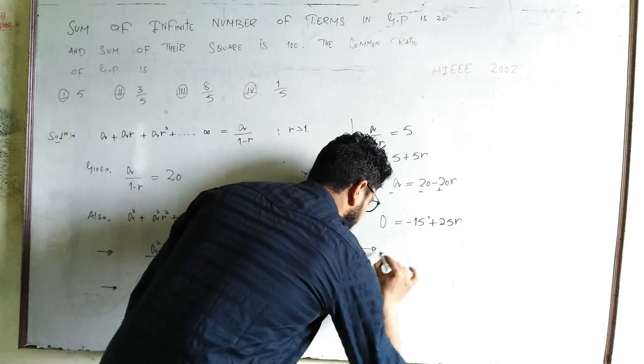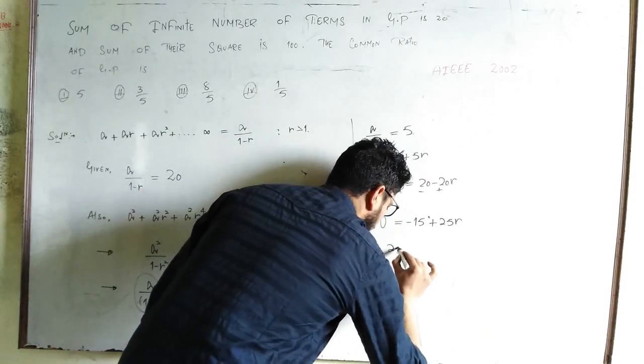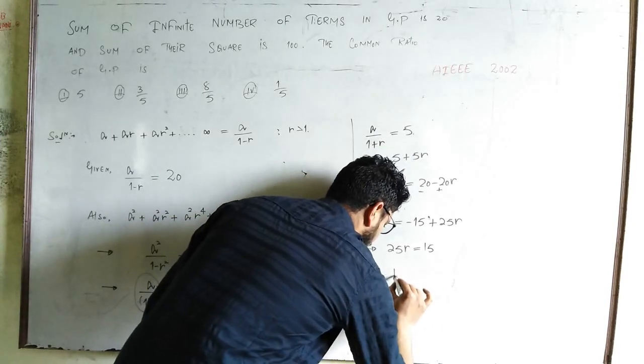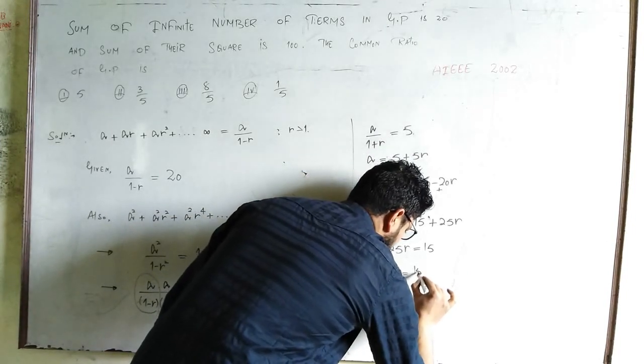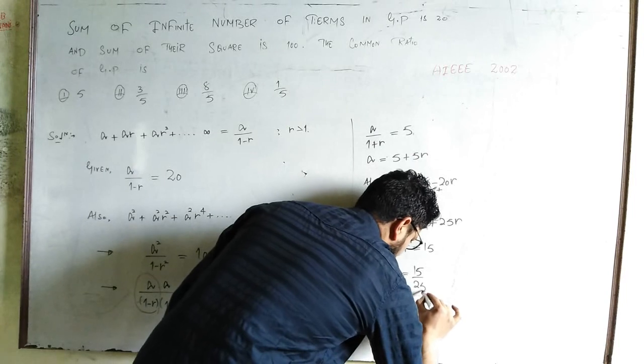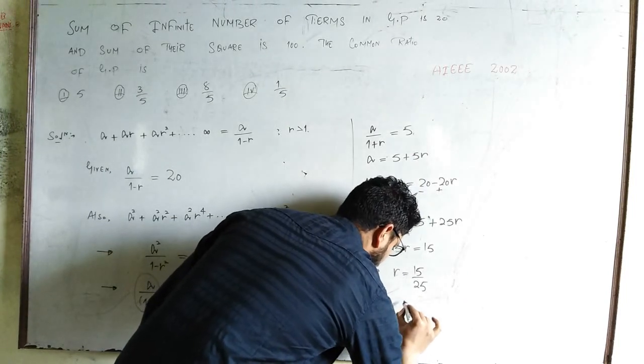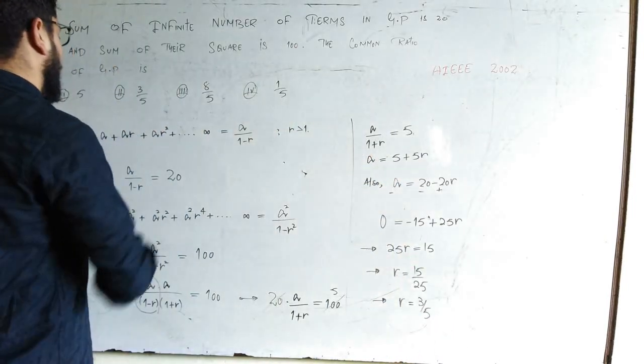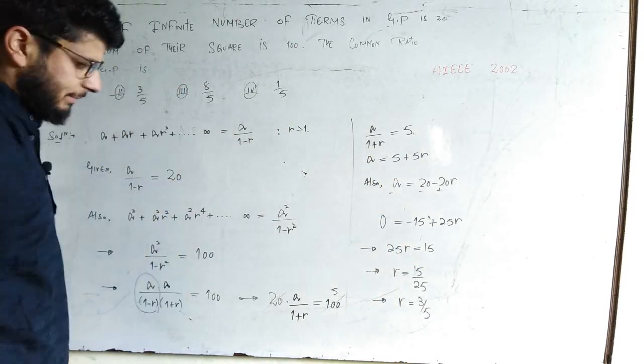This gives us 25r = 15, so r = 15/25 = 3/5. Option 2 is correct. That's it.